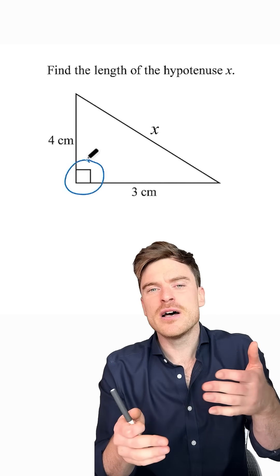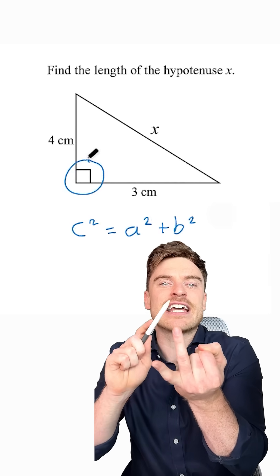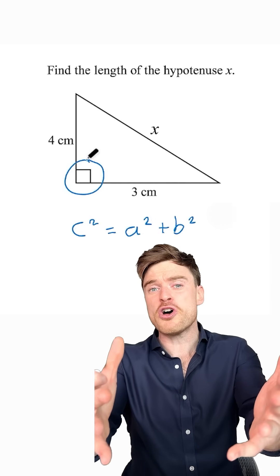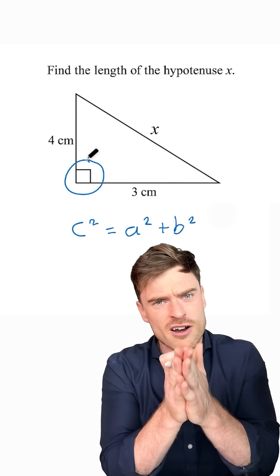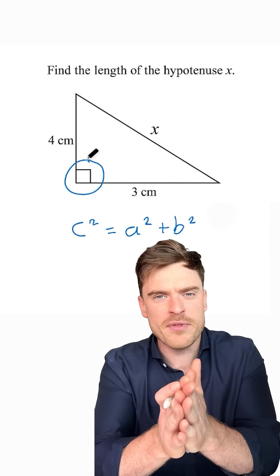Now, what is Pythagoras' theorem? You should remember it's C squared is equal to A squared plus B squared. If you don't know it, it's in your tables, but I'd go and learn it. Which is A, which is B, which is C? I want you to remember this.